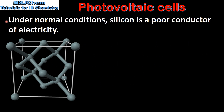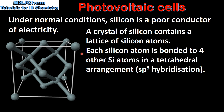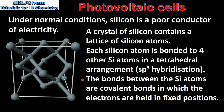Under normal conditions silicon is a poor conductor of electricity. A crystal of silicon contains a lattice of silicon atoms, which we can see on the left. Each silicon atom is bonded to four other silicon atoms in a tetrahedral arrangement. The silicon atoms are sp3 hybridized. The bonds between the silicon atoms are covalent bonds in which the electrons are held in fixed positions.